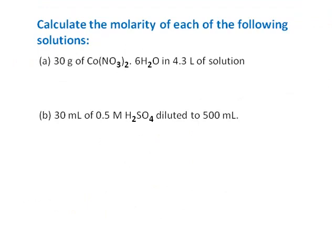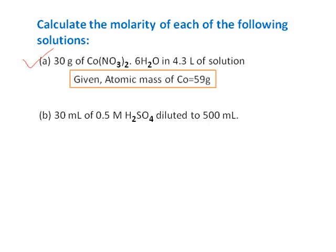Next, calculate the molarity of each of the following solutions. First: 30 grams of cobalt(II) nitrate hexahydrate in 4.3 liters of solution. The atomic mass of cobalt is given as 59 g. Second: 30 mL of 0.5 molar sulfuric acid diluted to 500 mL.